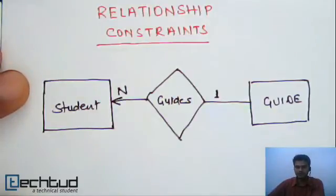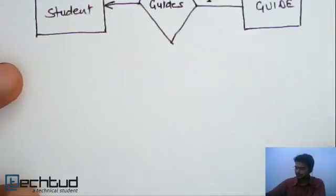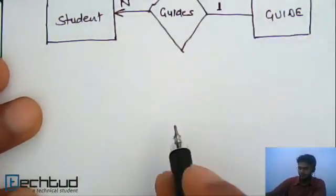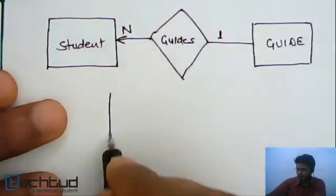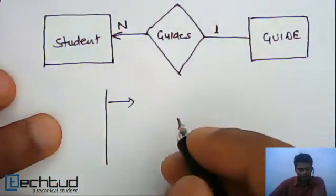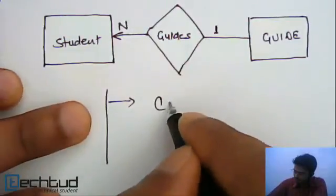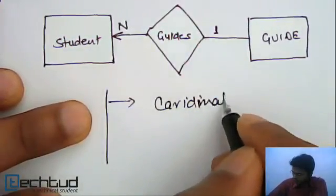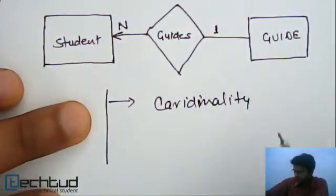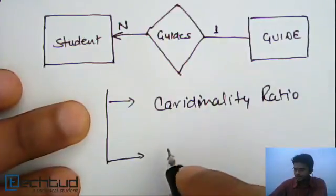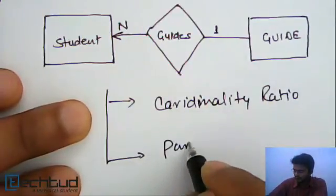We have various kinds of relationship constraints. The two main types are: first one is cardinality ratio, and the second one is participation constraint.